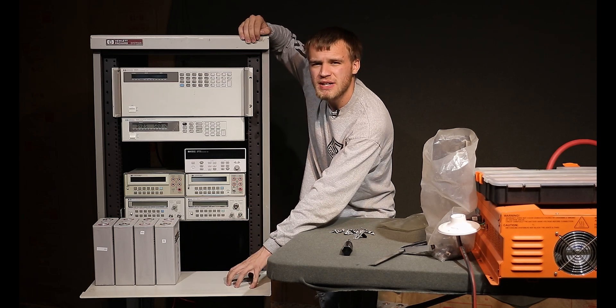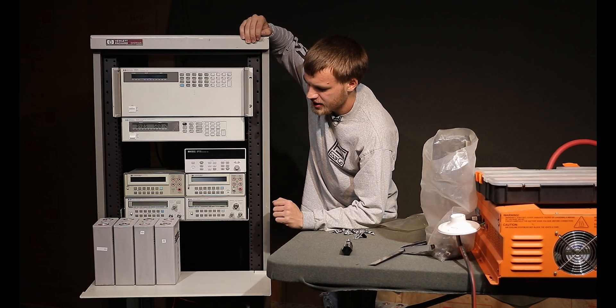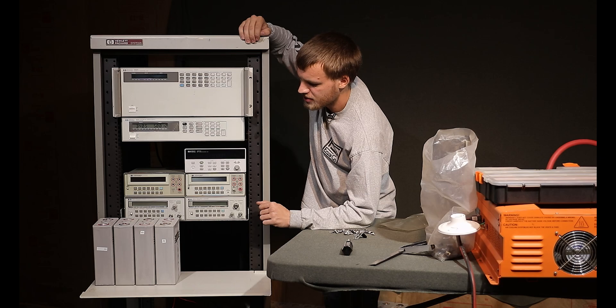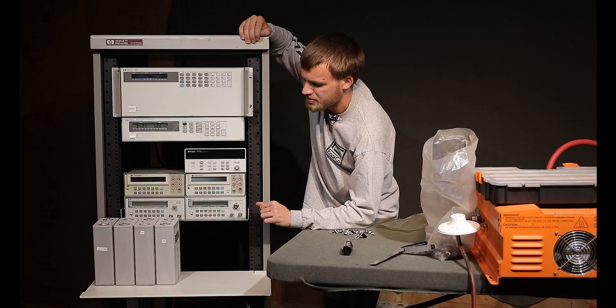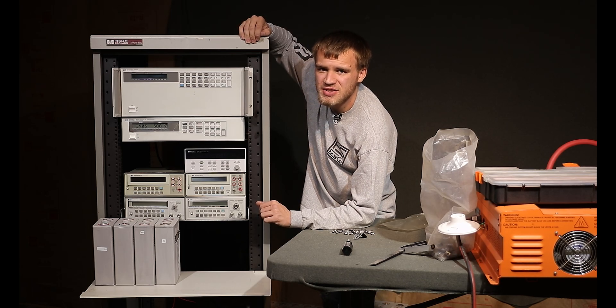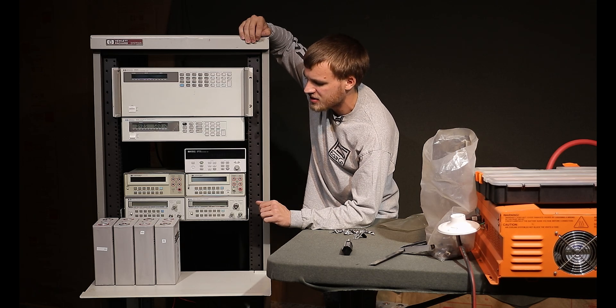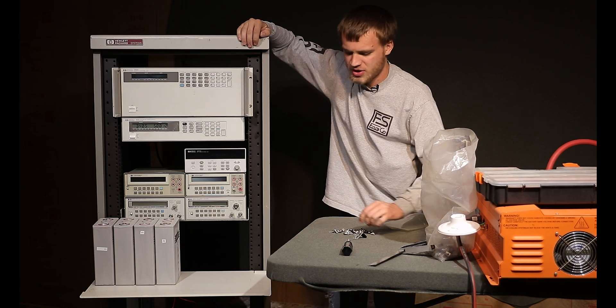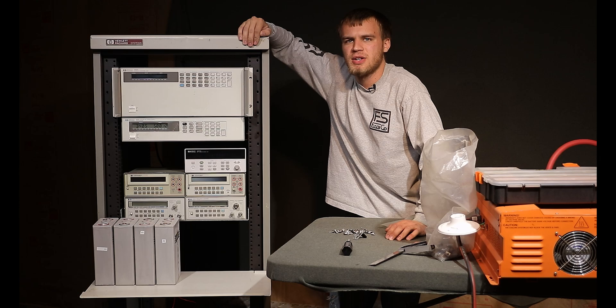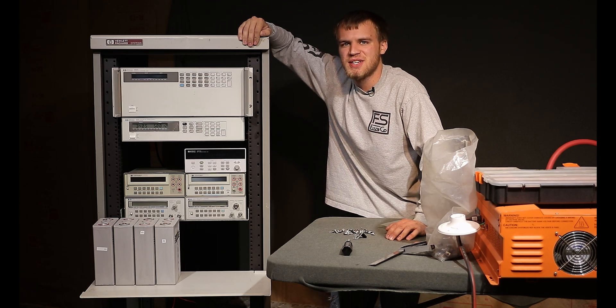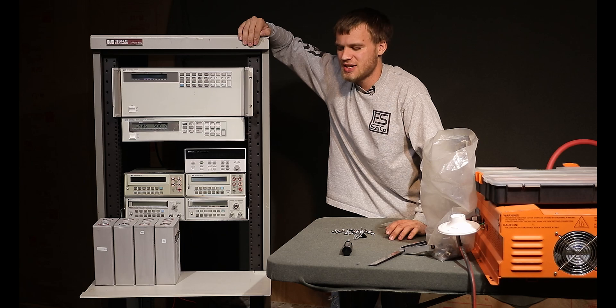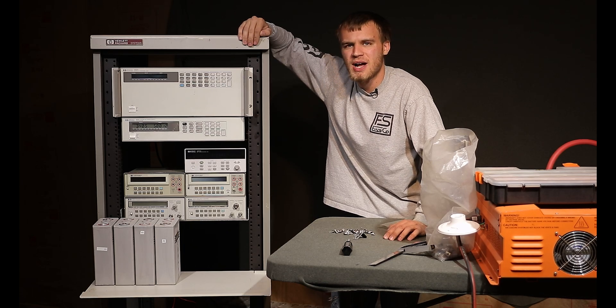We also have a shelf down here at the front and right now I have sitting on here some old Calb CA100 batteries. These have been cycled thousands of times and are at the end of their life and we're going to be making a video here real quick about using some active cell balancers to see if we can increase the usable capacity when those are assembled in a battery pack.